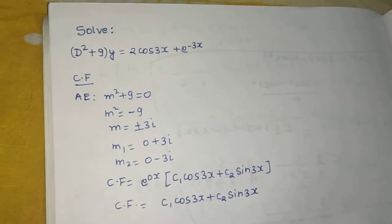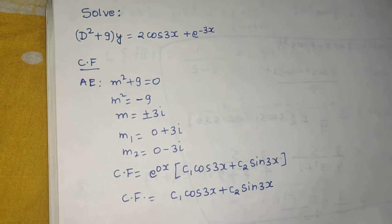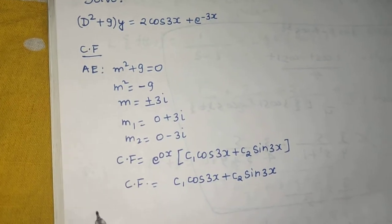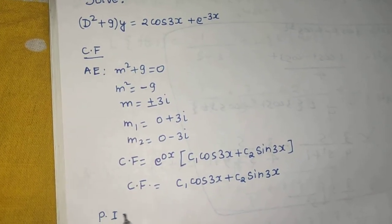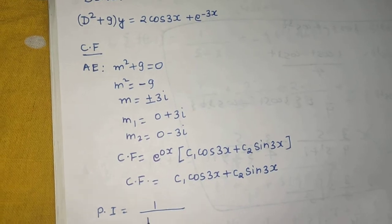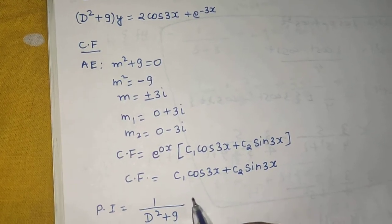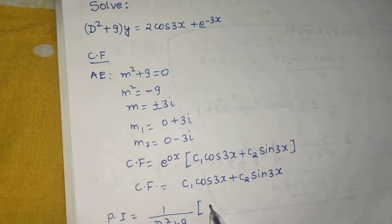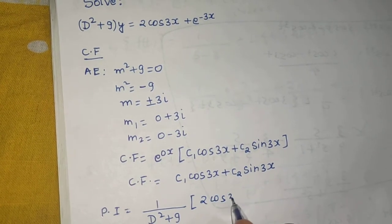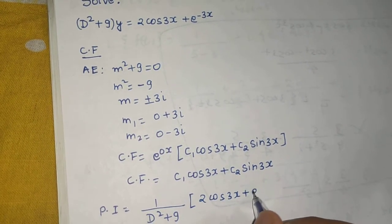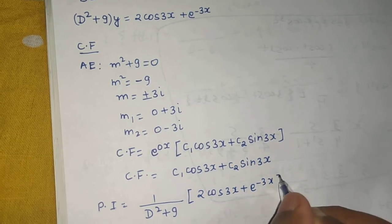Now moving ahead with the particular integral, that will be 1 upon f of D, which is D squared plus 9, operating on 2 cos 3x plus e power minus 3x.